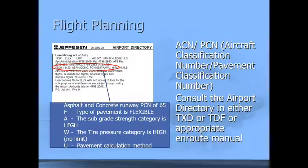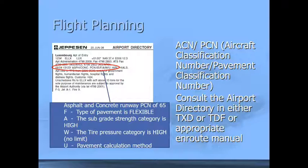Our aircraft classification number and the pavement classification number — these have to work with each other. The Jefferson Airport directory information in this section is going to be available to the dispatcher or to the pilot.